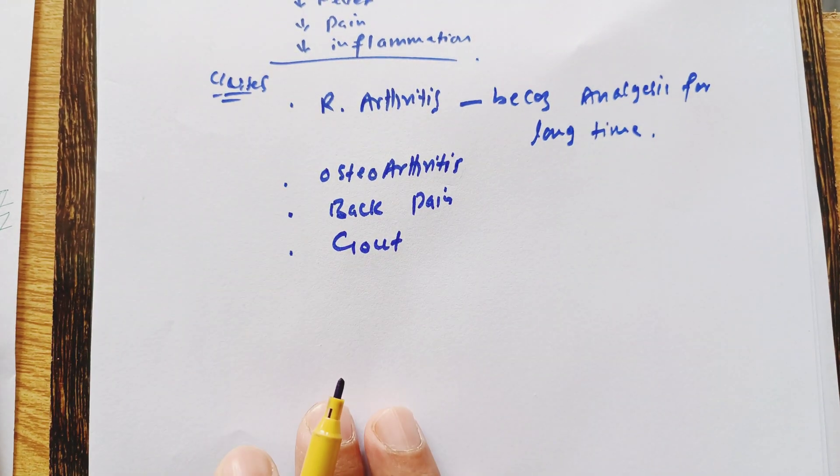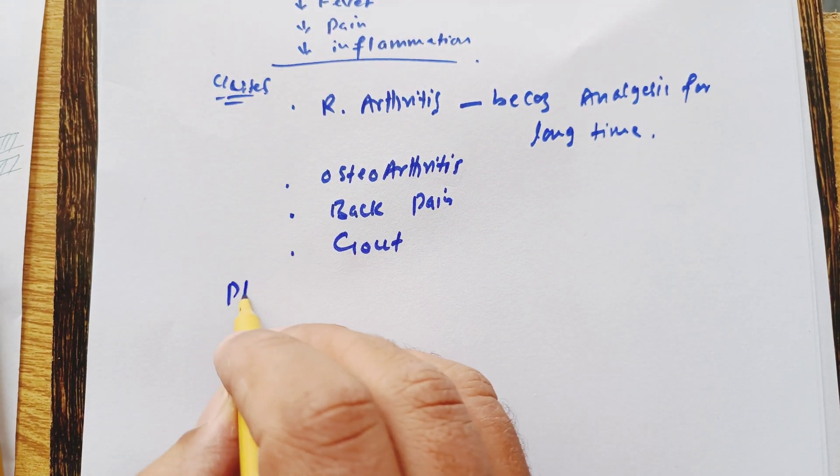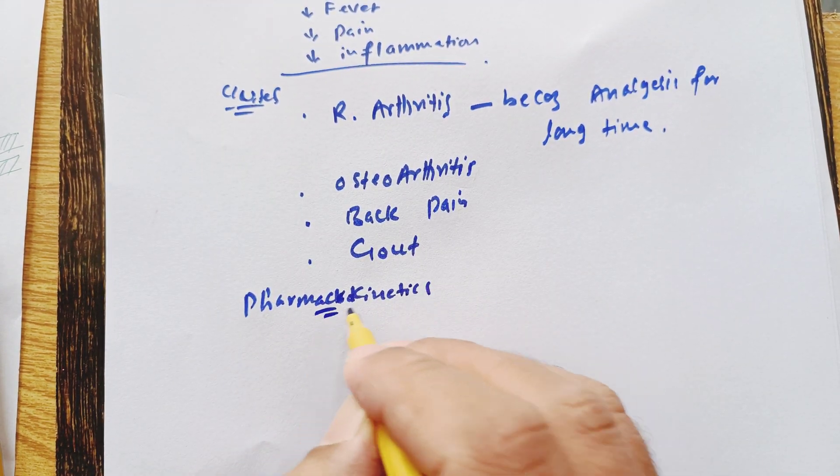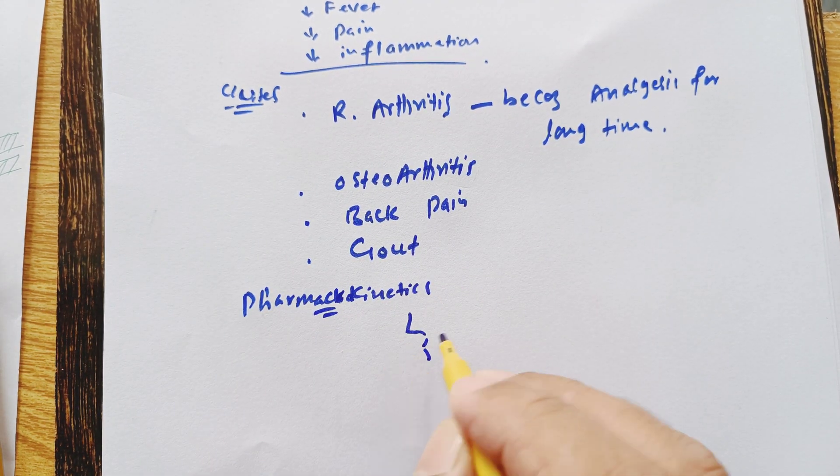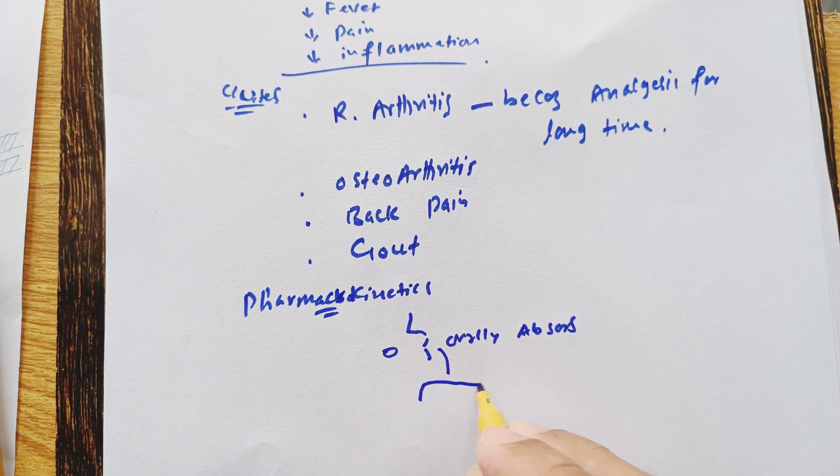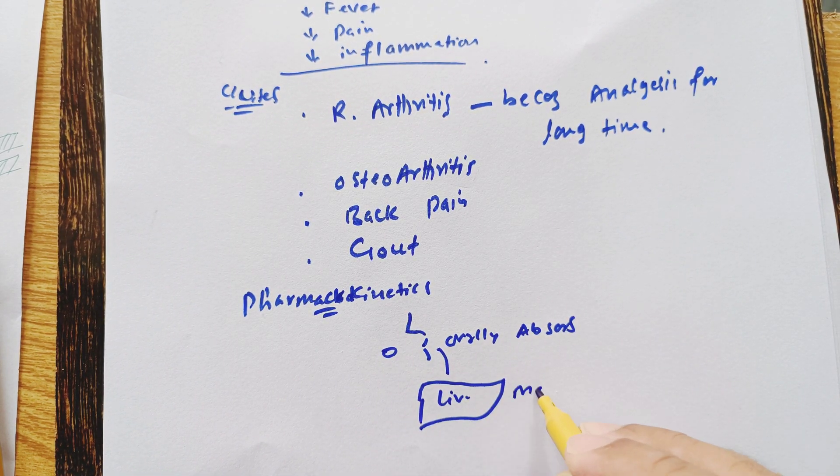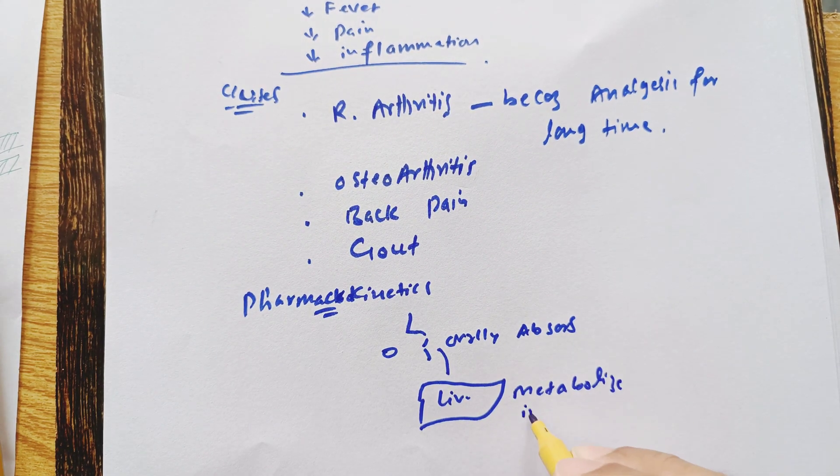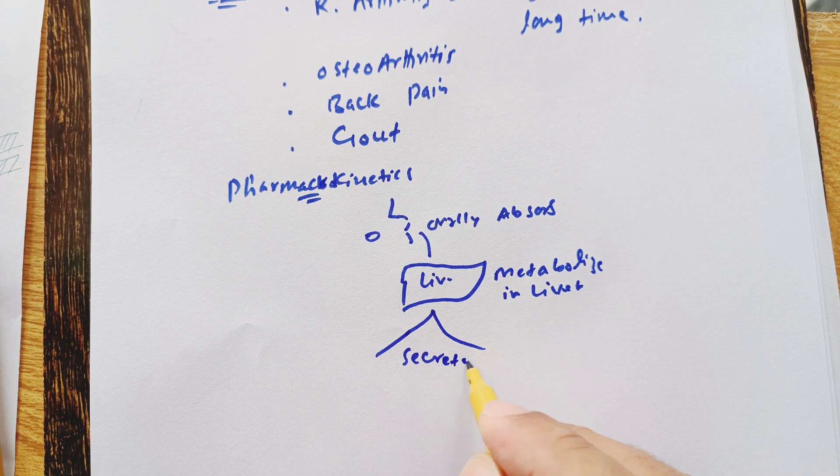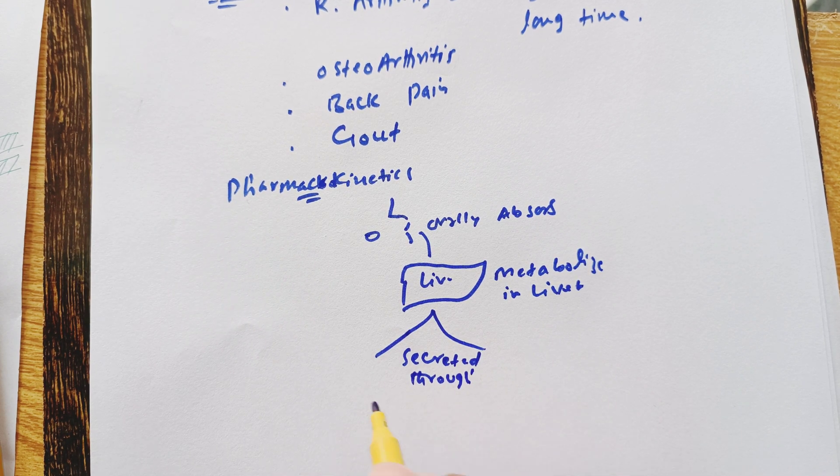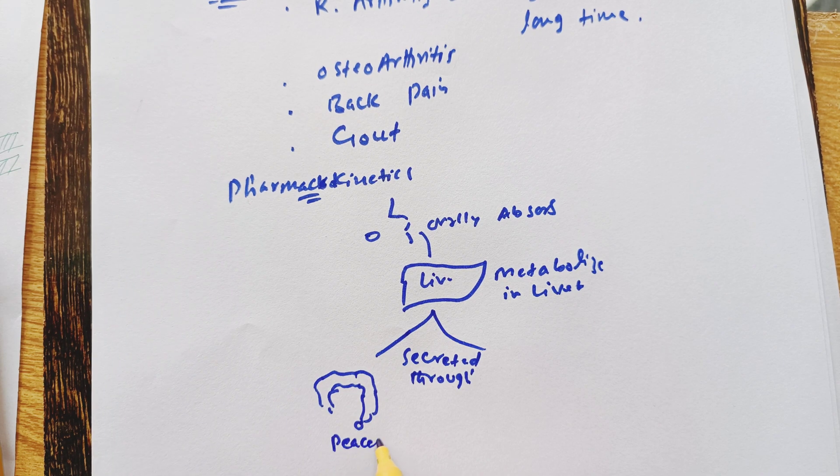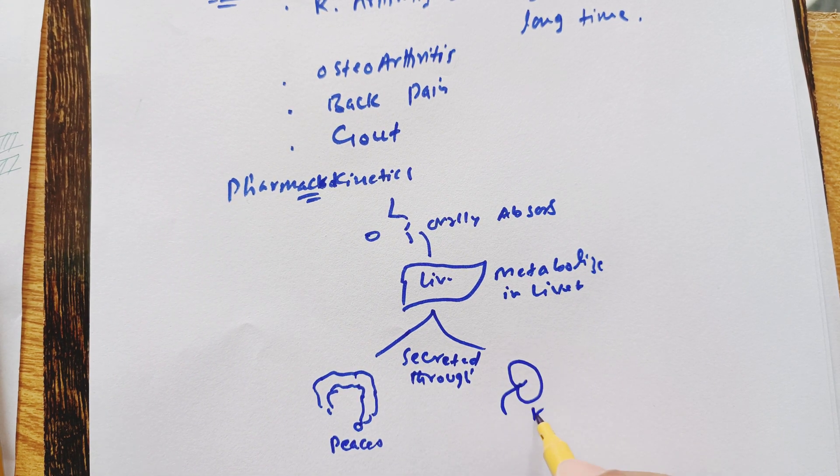Now these drugs are going to be absorbed orally. So pharmacokinetics will be absorbed orally and metabolized in the liver by cytochrome P450 enzyme system and then are going to be secreted in feces or digestive system and also in urine or kidney.